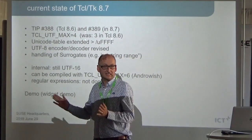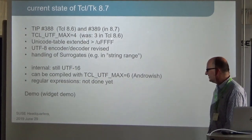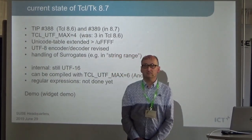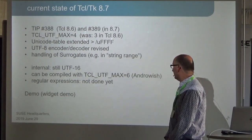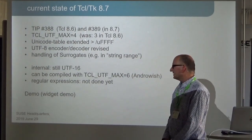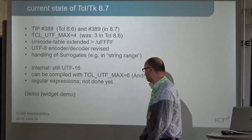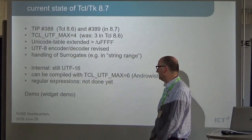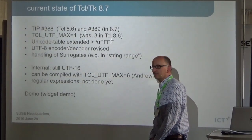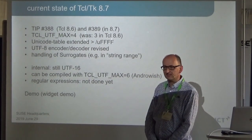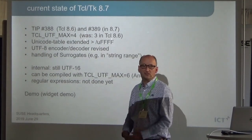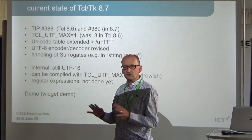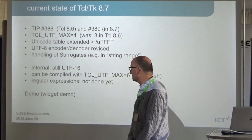If you do a string range on a string, you might chop it in the middle of a surrogate pair. Internally Tcl is still UTF-16, but you can also set TCL_UTF_MAX to 6, which is what Android does. Then internally everything switches to 32 bits. That has the advantage that everything works as expected — all Unicode characters have a length of one and are not split into surrogates internally.